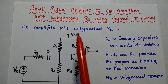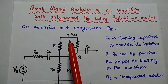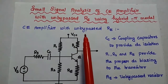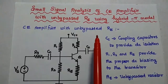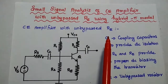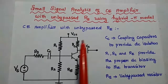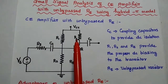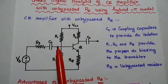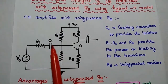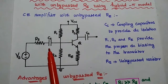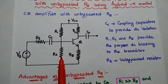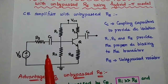Dear students, now we are going to discuss small signal analysis of common emitter amplifier with unbypassed emitter resistor. For that we can consider a common emitter amplifier with voltage divider biasing circuit.